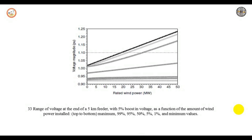The range of voltage at the end of a 5 km feeder with 5% voltage boost is shown as a function of the amount of wind installed, at 1, 5, 50, 95, and 99 percentile levels. The high voltage end shows increases similar to constant production generation. The low voltage end shows no increase — connecting wind power does not solve under-voltage problems. Using the 95% or 99% value as a limit, the hosting capacity for wind power is about 2 and 10 MW respectively. The hosting capacity increases significantly when stochastic performance criteria are employed.